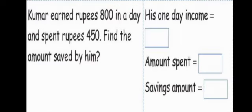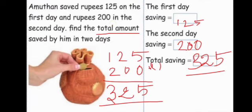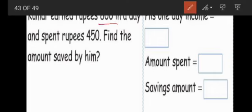Kumar earned Rs. 800 in a day and spent Rs. 450. Spent means he bought some things. Find the amount saved by him. Here they do not ask 'total' — so this is a subtraction sum. From the 800, we subtract 450 from 800. Rs. 800 is the one-day income and Rs. 450 is the amount spent. So 800 minus 450.